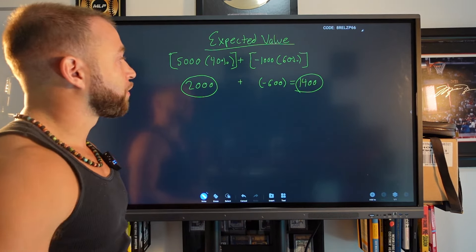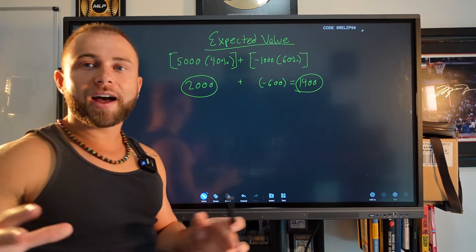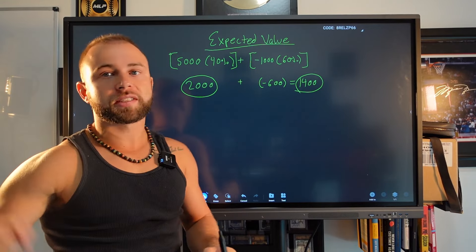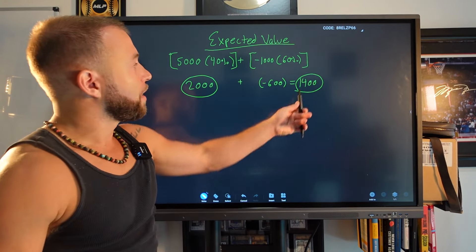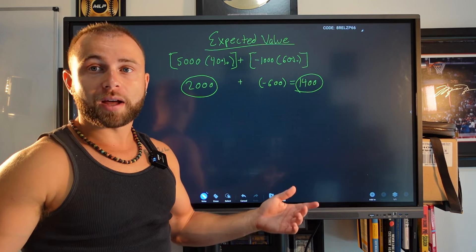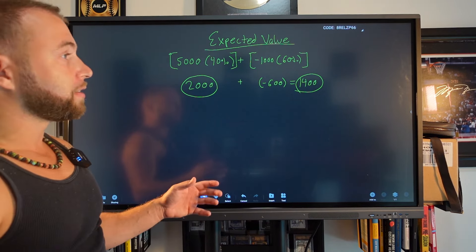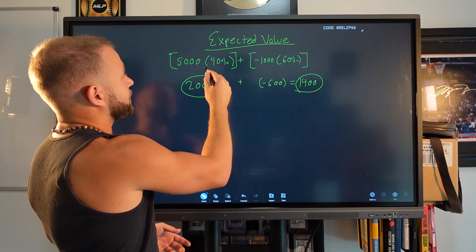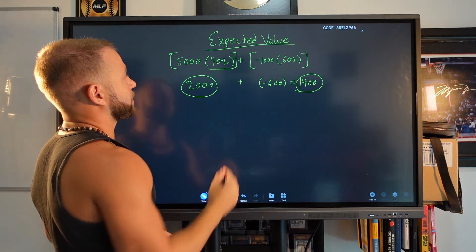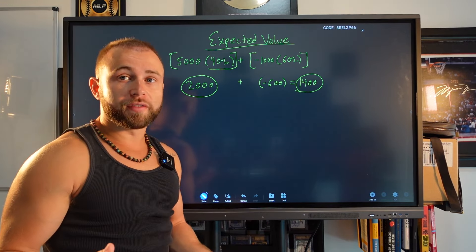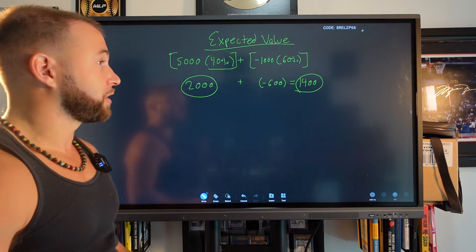So what this number means, $1,400, the average, if I bought this card a million times and sent it in for grading a million times, that's what my average profit would be. Not bad. Now, obviously, this is a little subjective because I'm kind of guessing here that there's a 40% chance it'll grade a 10. I actually, I try to be conservative with these values. I actually gave it about a 50-50 shot. Now, the card did not grade a 10, so I'm going to lose about $1,000 on it, which is okay.